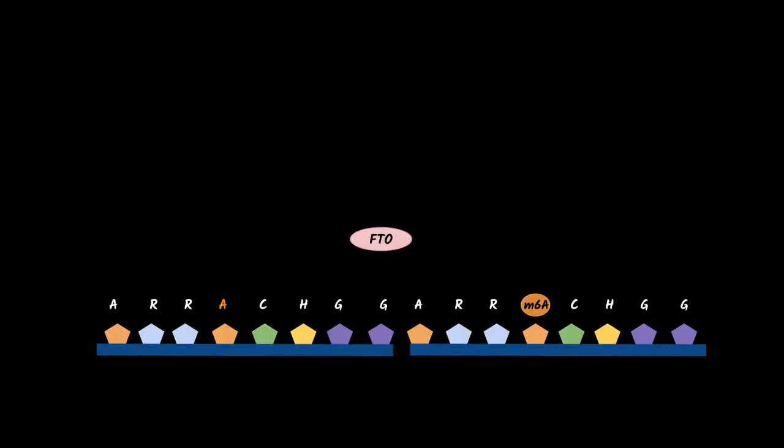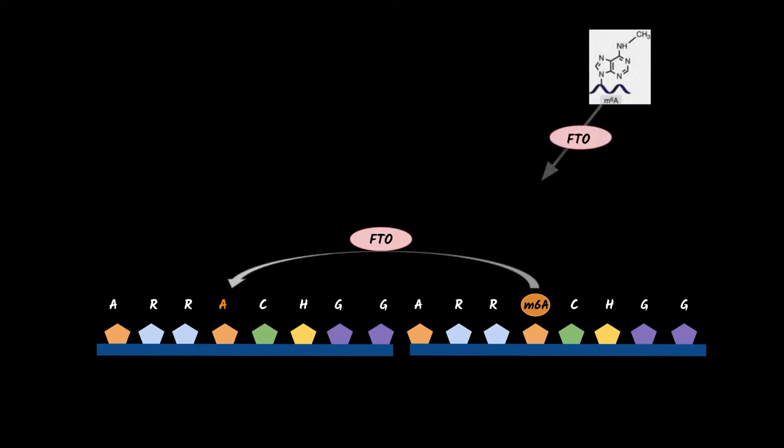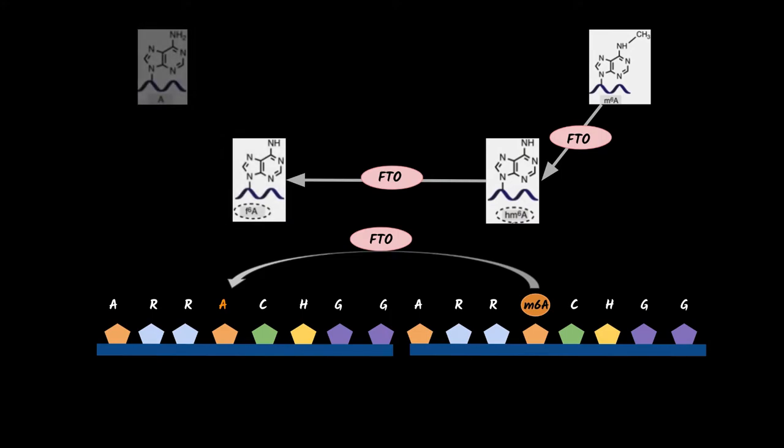The M6A modification is reversible due to the action of erasers. FTO catalyzes the demethylation through three rounds of oxidative reactions, generating two intermediates, HM6A and F6A. The first can turn into the second or directly into adenosine demethylated.